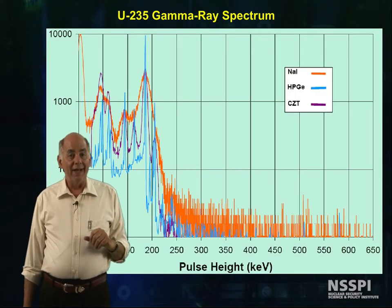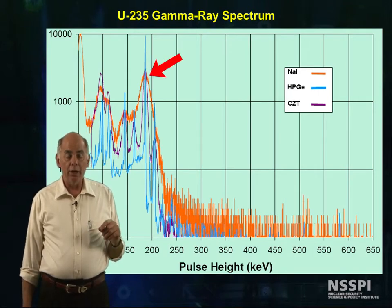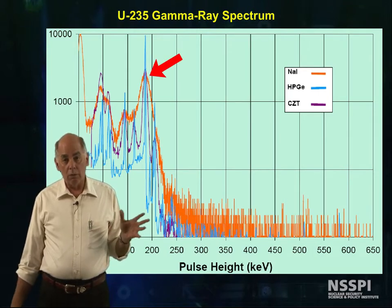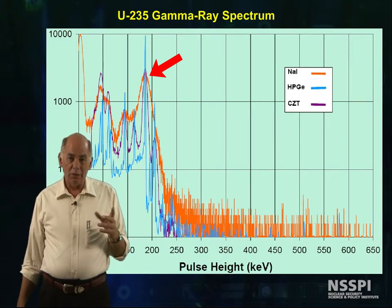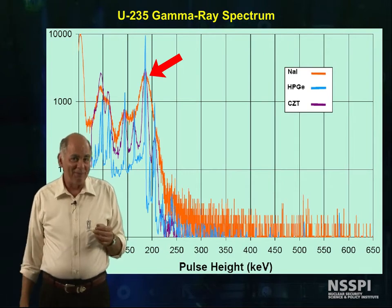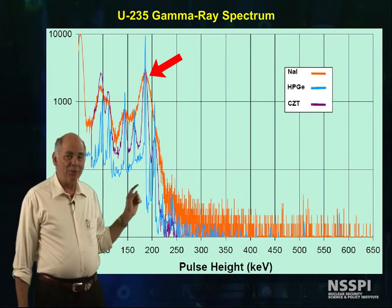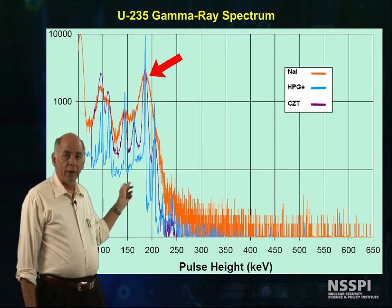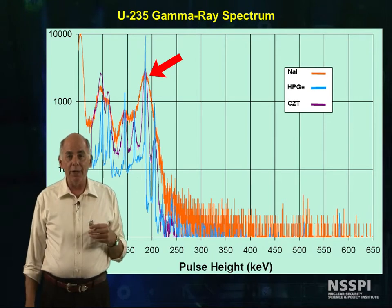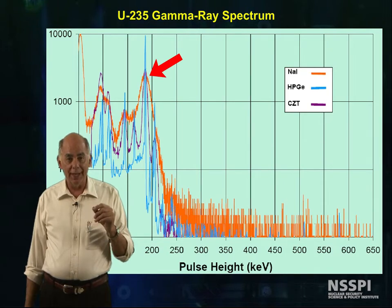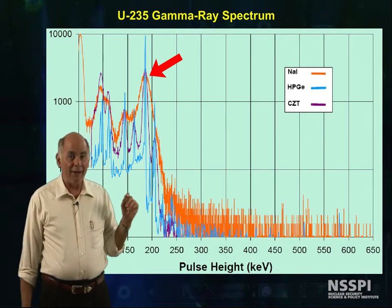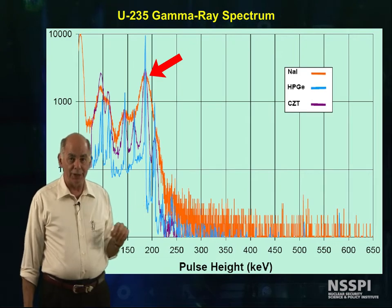If the sample were LEU, we would have a Compton continuum in that area from the 1001 keV peak from U-238, which is actually from the daughters. Since detectors are much more efficient for counting low-energy gammas than high-energy ones, it's very common to measure the enrichment of a sample by measuring the relative strength of the 186 keV peak to the Compton continuum above the 186 keV.